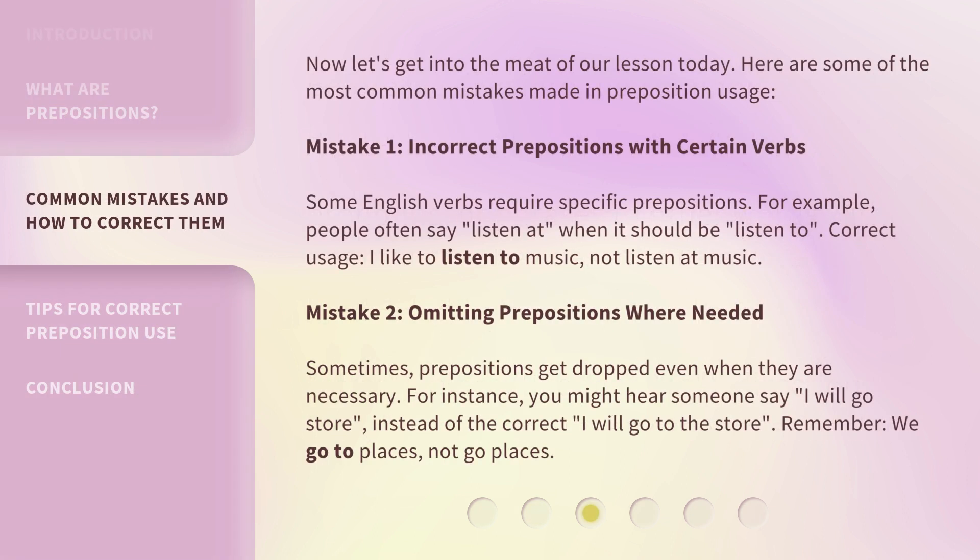Now let's get into the meat of our lesson today. Here are some of the most common mistakes made in preposition usage. Mistake 1: Incorrect prepositions with certain verbs. Some English verbs require specific prepositions. For example, people often say 'listen at' when it should be 'listen to.' Correct usage: I like to listen to music, not listen at music.